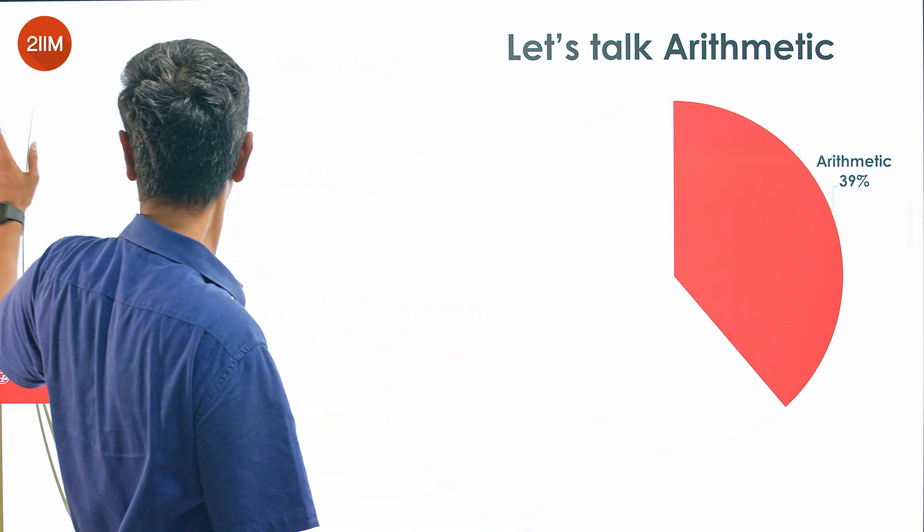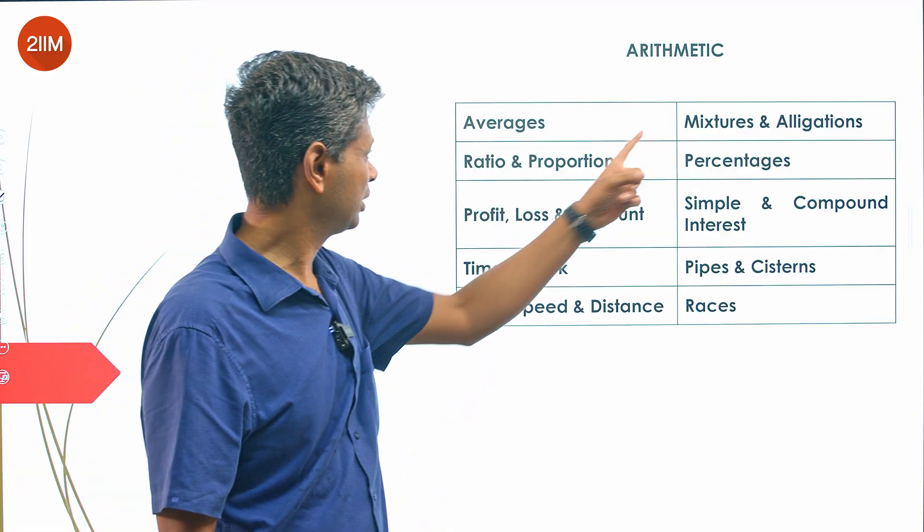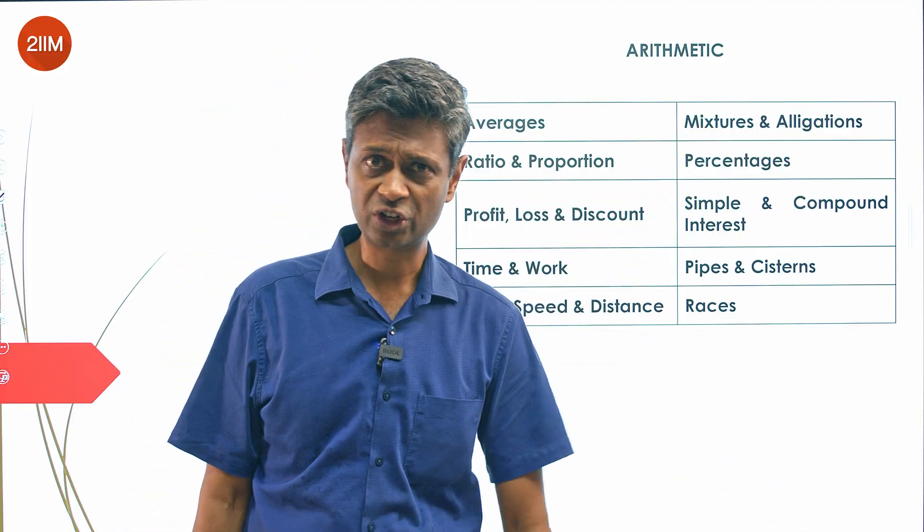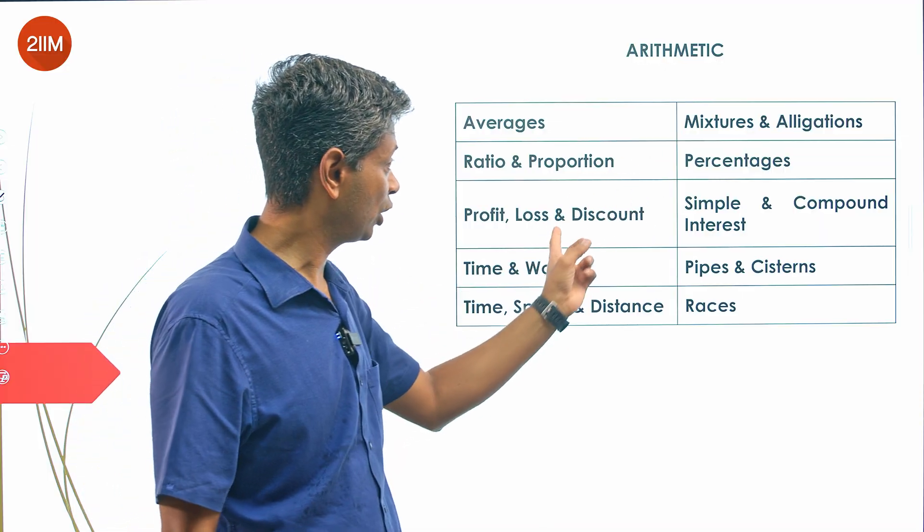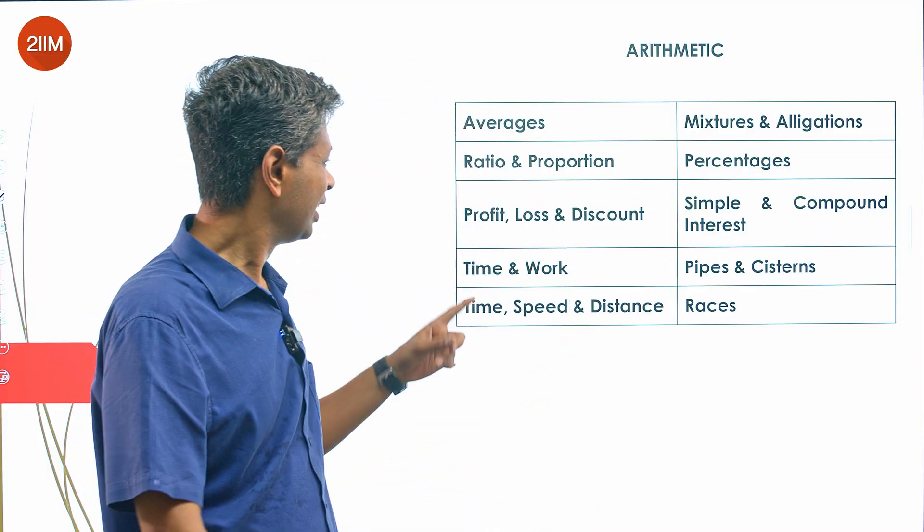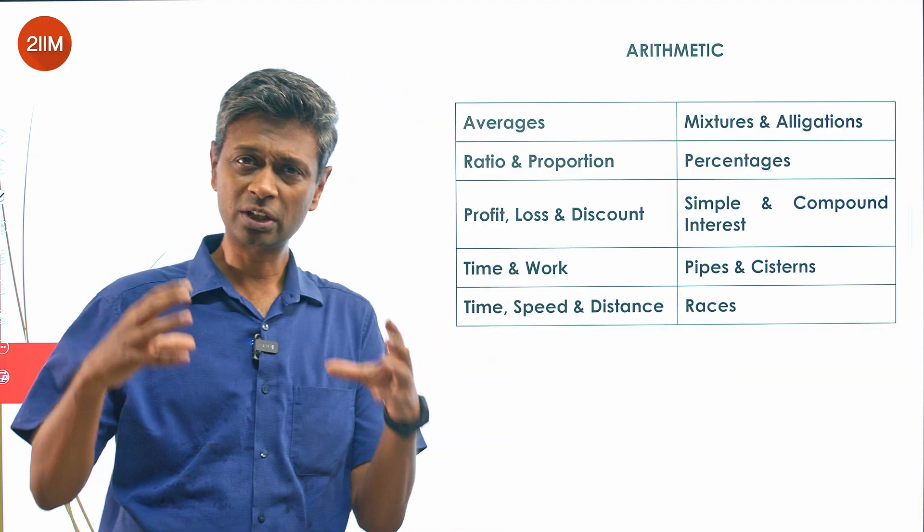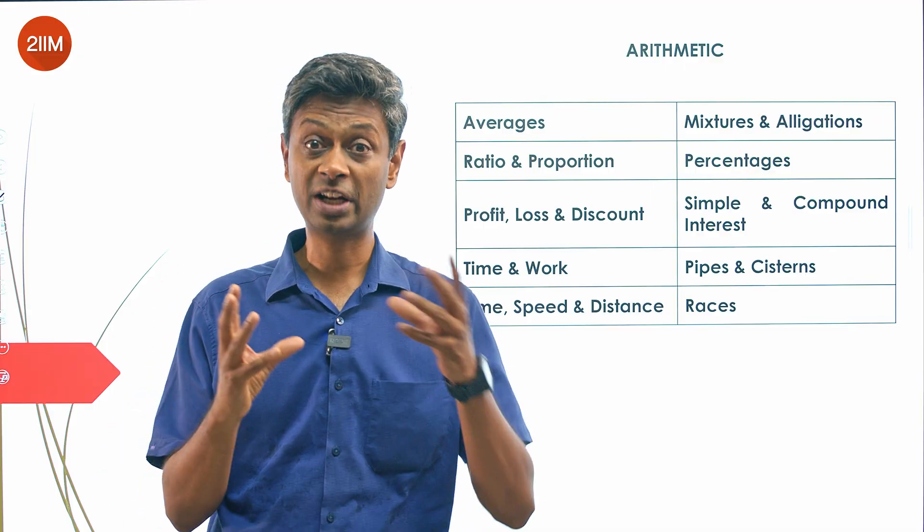There's a bunch of very simple, straightforward topics: percentages, profit and loss, ratio and proportion, mixtures and allegations, and averages put together. Simple interest, compound interest put together. Speed, time, distance, races, pipes and cisterns, time and work - one chunk. Everything linked to ratios and proportions, inverse proportion, direct proportion.